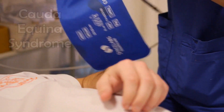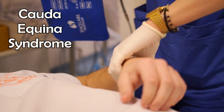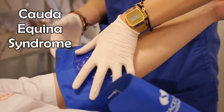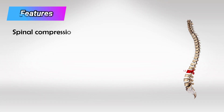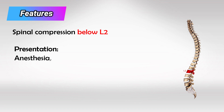Welcome back. In this video, we'll talk about Cauda Equina Syndrome. This is due to compression of the spinal cord below the L2 level, and this will result in a triad of loss of sensation, absent reflexes, and loss of control of the bladder. The presence of these three symptoms is almost definitive for the diagnosis of Cauda Equina Syndrome.